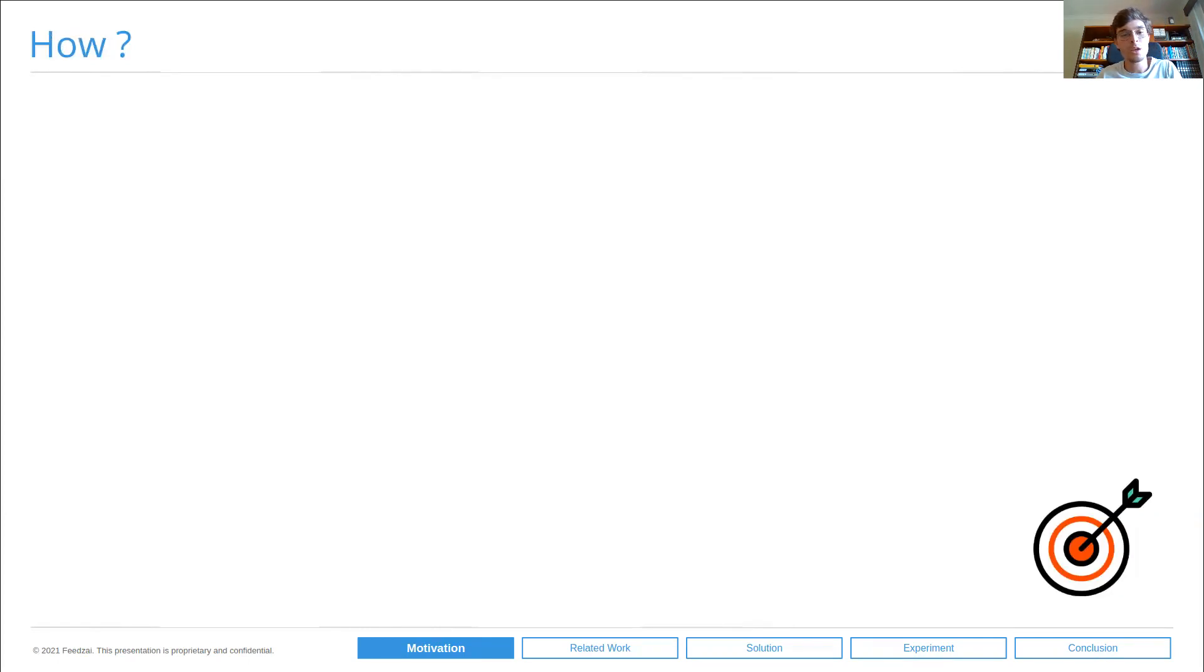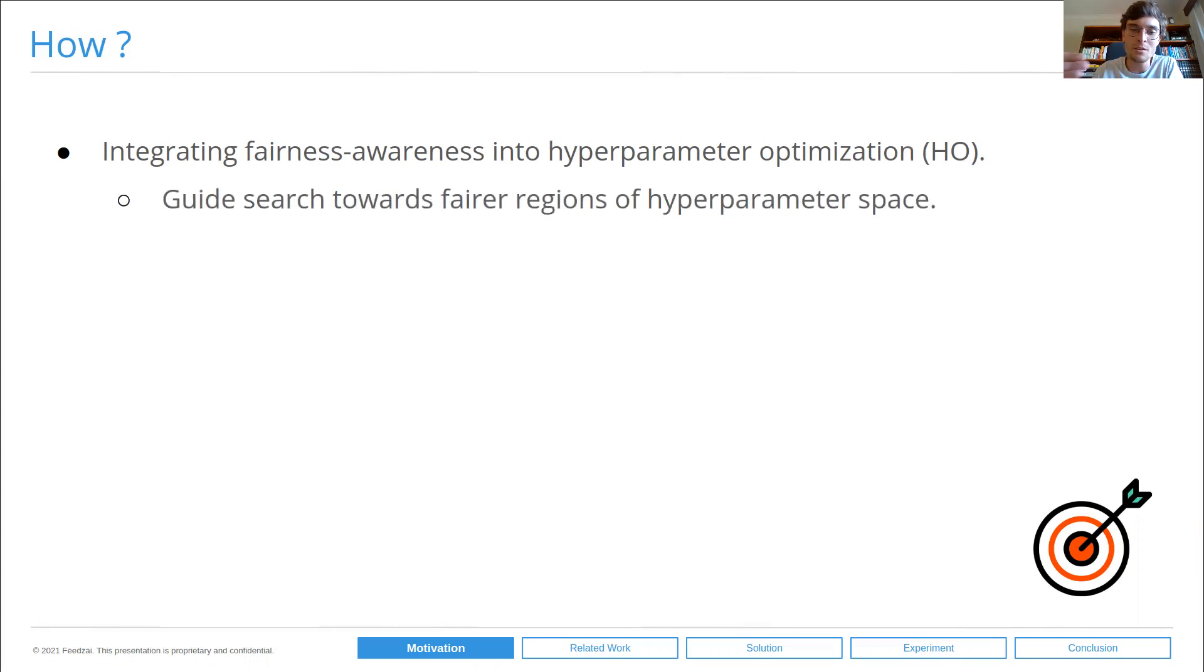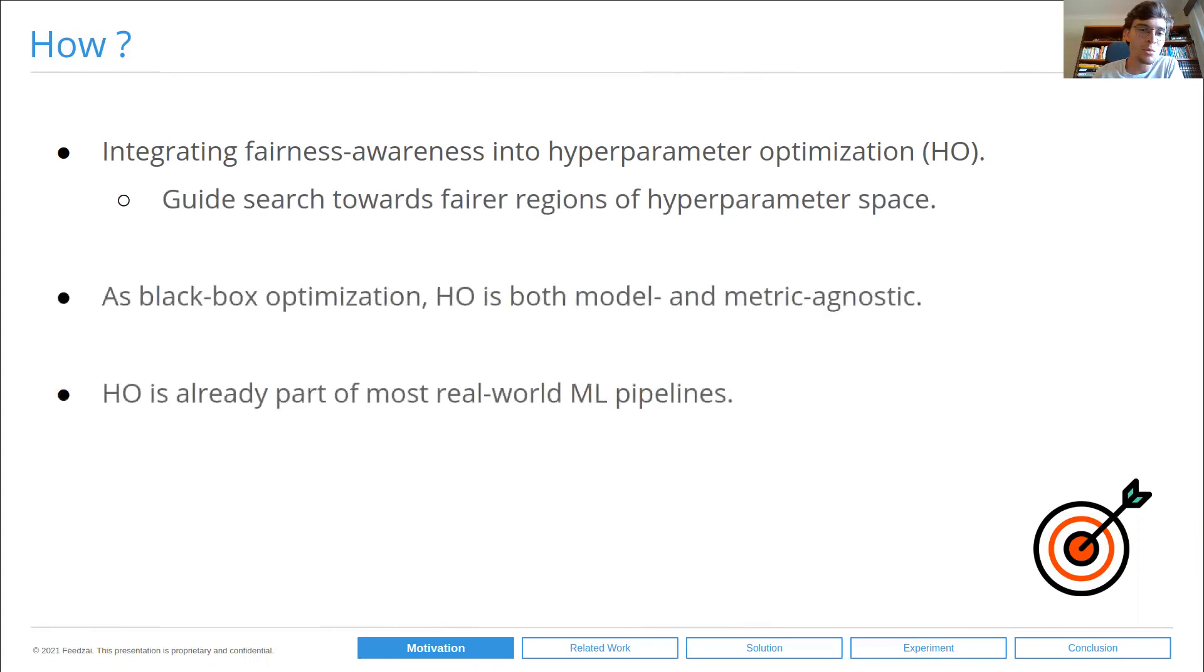And how do we aim to achieve this? As the title of the talk indicates, we will integrate fairness awareness into the hyperparameter optimization process by guiding the search towards fair regions of our parameter space. As a black box optimization method, it is both model and metric agnostic inherently. And importantly, this is already part of most real-world ML pipelines. Most real-world ML pipelines already have a hyperparameter optimization process, so there's potential to introduce fairness at no extra cost or effort.